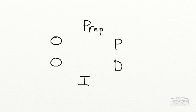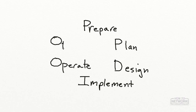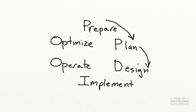The six phases are: Prepare, Plan, Design, Implement, Operate, and Optimize. This is a lifecycle — it doesn't end once you hit Optimize. It's a continual process going from Prepare, Plan, Design, Implement, Operate, and Optimize, and then around again. On a regular basis you're constantly looking at the network, seeing what can be done to make it run more efficiently and more cost effectively.